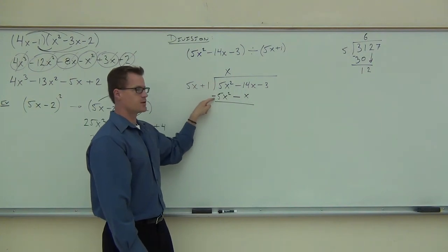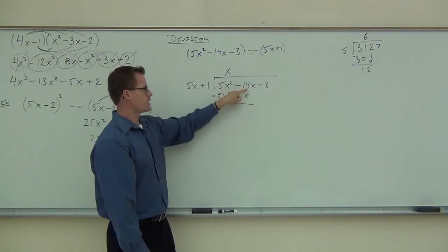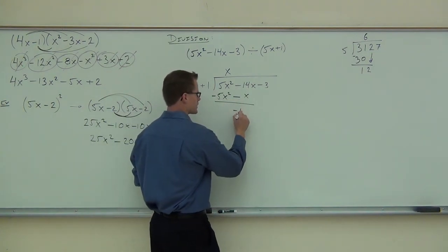What's 5x² and a negative 5x²? Zero. Gone. What's negative 14x and negative x? Negative 15x. Perfect. That's exactly right.